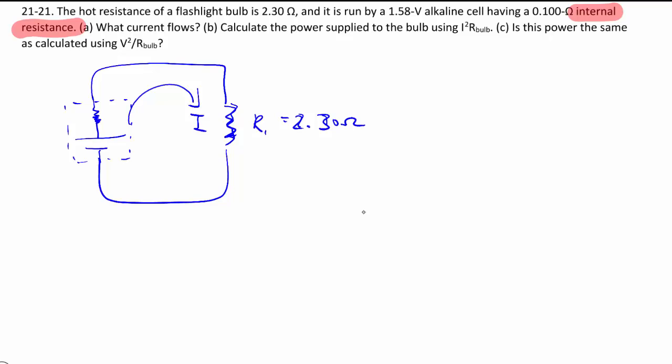So in that sense, because in series, the current is the same, but we split the voltage. The device that you want to run doesn't get the full voltage supplied by the battery. The full voltage supplied by the battery is here.